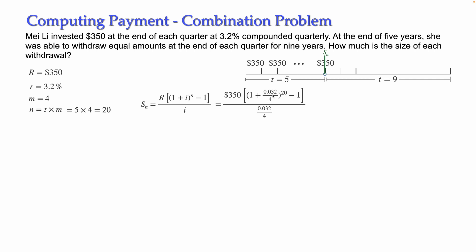In problems where the periodic interest divides evenly, you can simplify: 0.032 divided by 4 equals 0.008, so you can type 0.008 directly. In other problems where the division produces many decimal places, it is better to leave it as a fraction. Entering all the numbers into the calculator, what I get is $7,558.43. This is the future value of the first annuity.